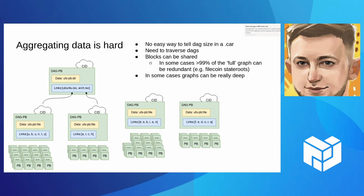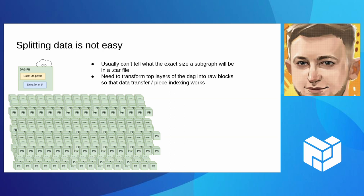You cannot really easily tell what size some DAG will have just by looking at the root node — you need to traverse the whole DAG. There are some caveats: multiple different DAGs that you are aggregating may share blocks, which makes the sizing really, really annoying because you don't really know beforehand what DAGs you're going to be aggregating. You may be dealing with graphs that have a lot of small blocks that are very expensive to traverse. Splitting data is also not easy, and going through really large graphs is just hard, painful, and slow.